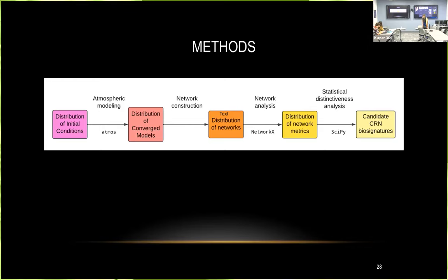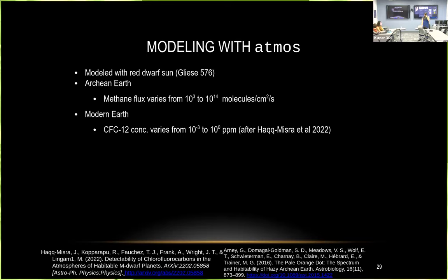We ran a distribution of initial conditions for the various modeled atmospheres — on average about 5,000 atmospheres per set, though a number did not converge. We ran them using ATMOS, an open-source one-dimensional planetary atmosphere model. From the converged models, we constructed networks and analyzed them using NetworkX, an open-source Python package for network analysis. We obtained a distribution of network metrics, and then used SciPy to determine if the distributions of networks from models with life were statistically distinguishable from those without life.